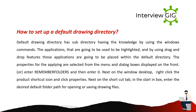How to set up a default drawing directory? The default drawing directory has a subdirectory that can be managed using Windows commands. The applications to be used are highlighted, and by using drag and drop features, those applications are placed within the default directory. The properties for the application are selected from the menu and a dialog box is displayed. Alternatively, enter the REMEMBERFOLDERS command and set it to 0. Next, on the Windows desktop, right-click the product shortcut icon and click Properties. On the Shortcut tab, in the Start In box, enter the desired default folder path for opening or saving drawing files.